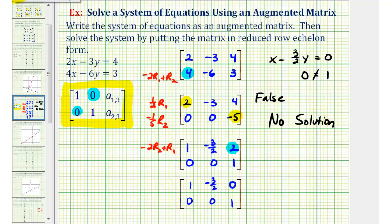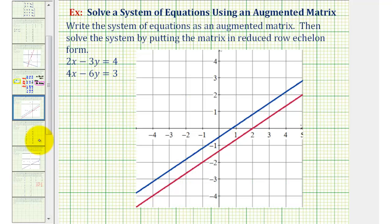So because our system has no solution, the system is inconsistent. If we want to verify the solution, we can graph the two linear equations on the same coordinate plane. And because there's no solution, the two lines should never intersect. So let's go and take a look at this graph. Here it is. Notice how the two lines are parallel, indicating that our system has no solution.